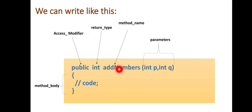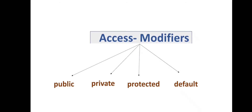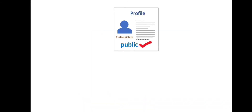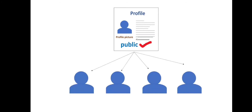Now first we are going to discuss about access modifier, also called the access specifier. We can use four types of access modifiers for a method: public, private, protected, and default. Access modifier is used to control the access level or scope of a method in a program. For example, if we create a profile on social media and set it as public, then everyone can see it. Similarly, if we declare a method as public, then this method will be accessible in all classes in our program.